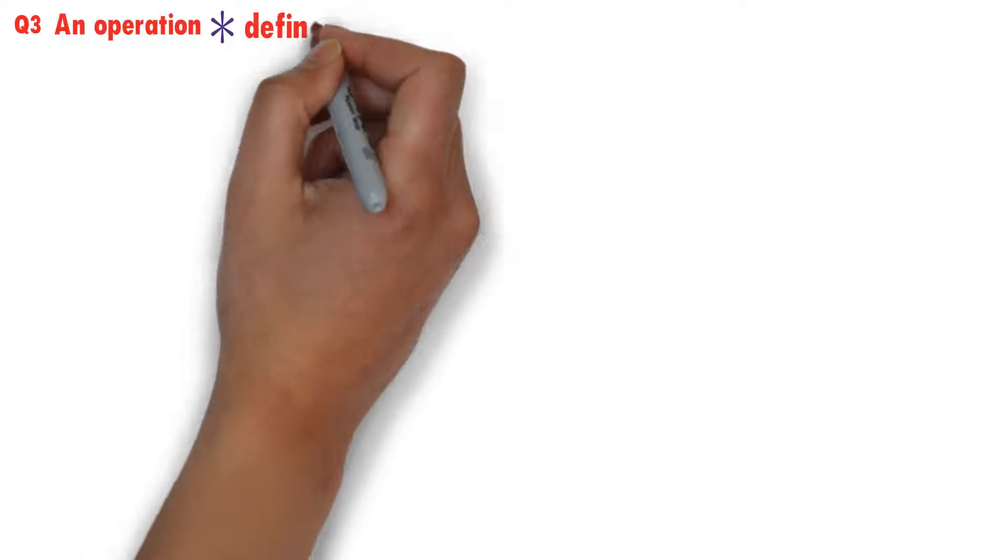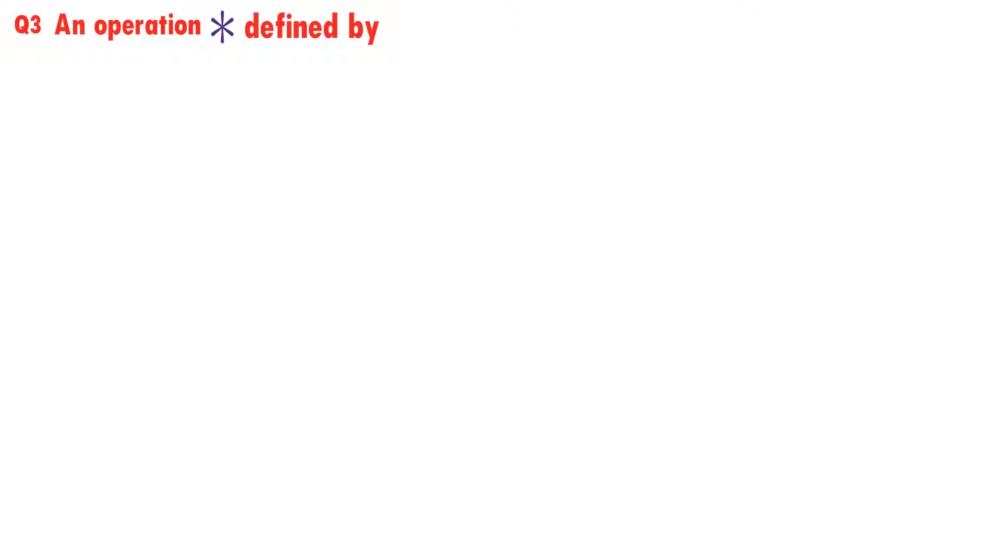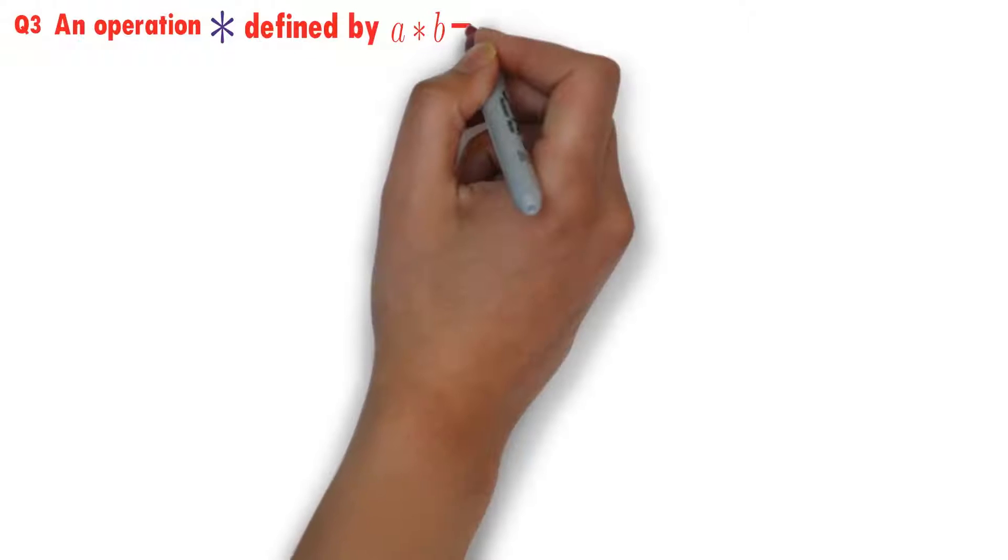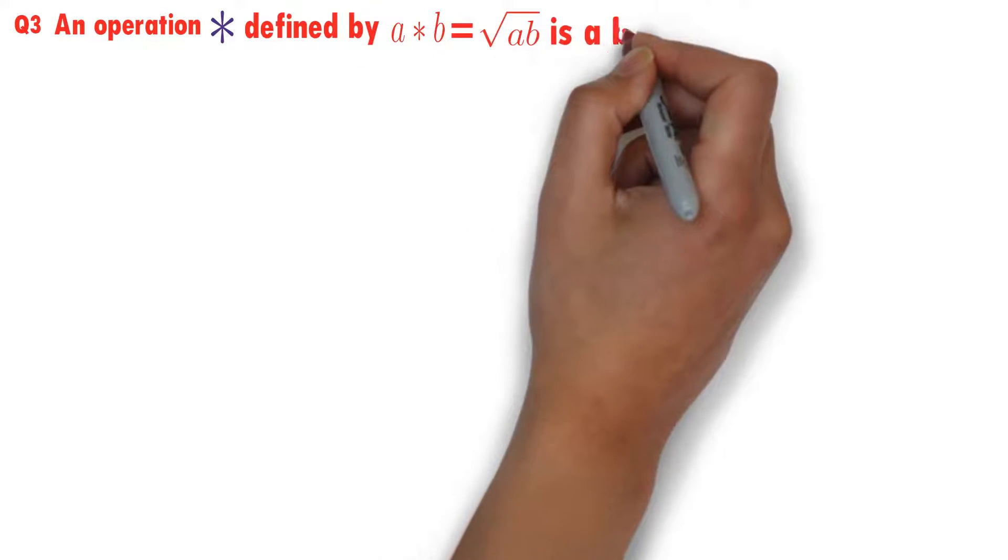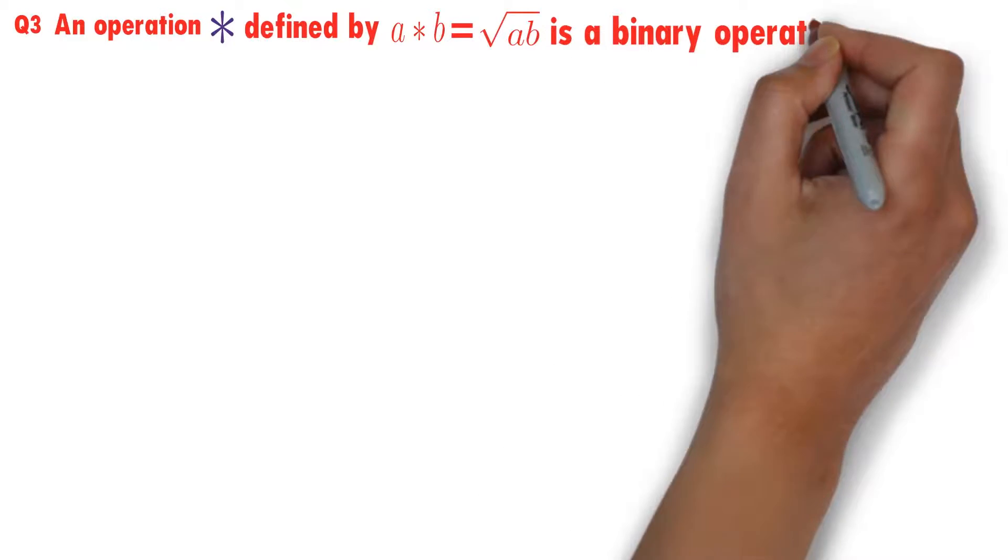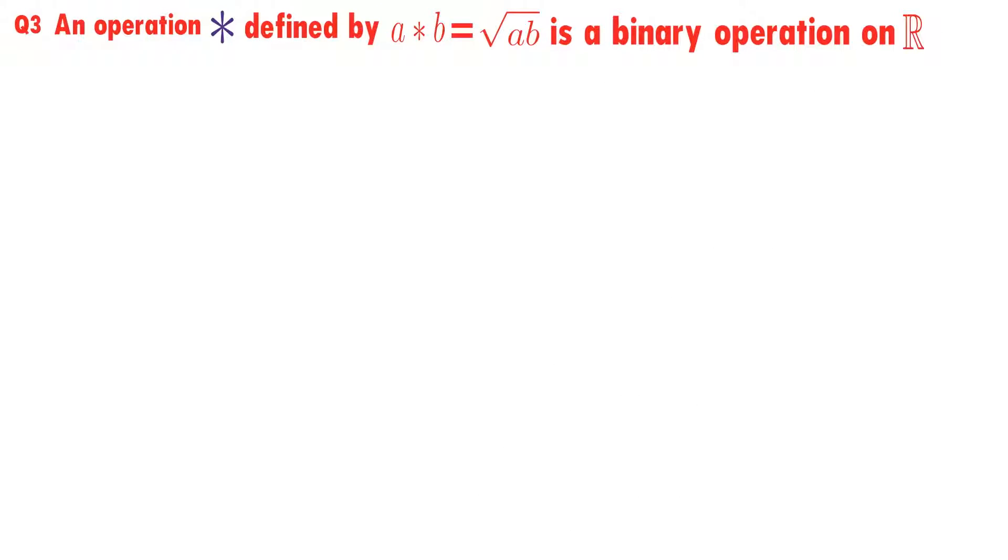An operation star defined by a star b equals square root of ab is a binary operation on set of real numbers. This is the question,